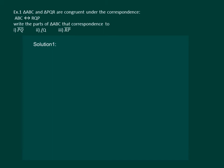Triangle ABC and triangle PQR are congruent under the correspondence ABC corresponds to RQP. Write the parts of triangle ABC that correspond to line segment PQ, angle Q, and line segment RP.